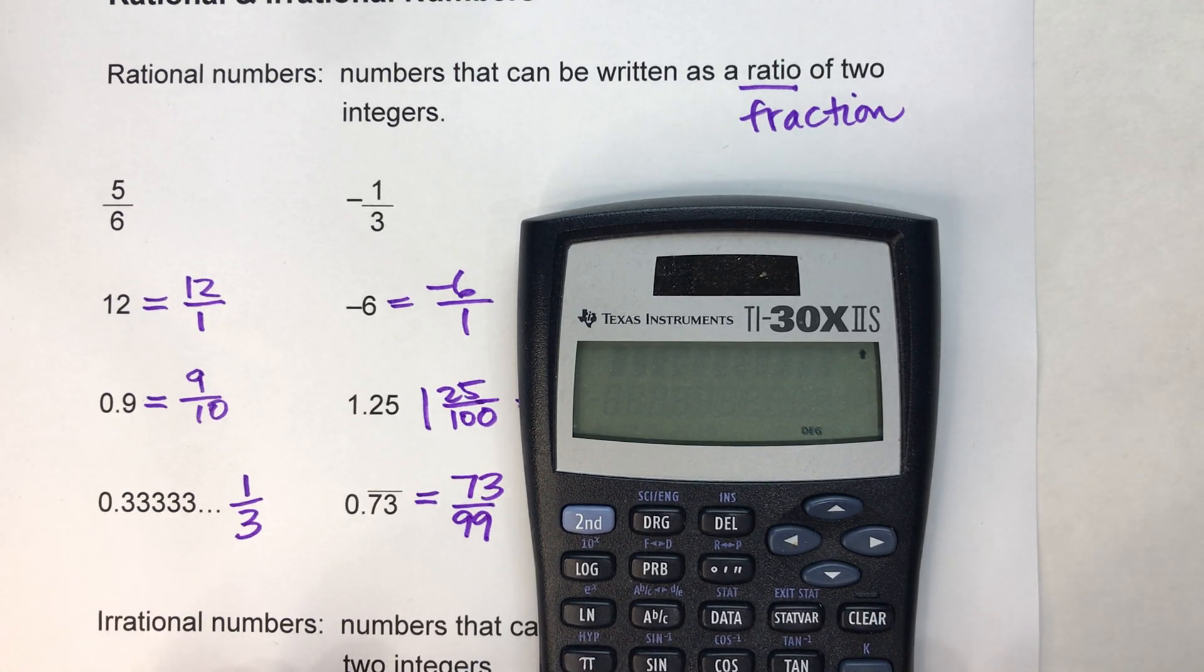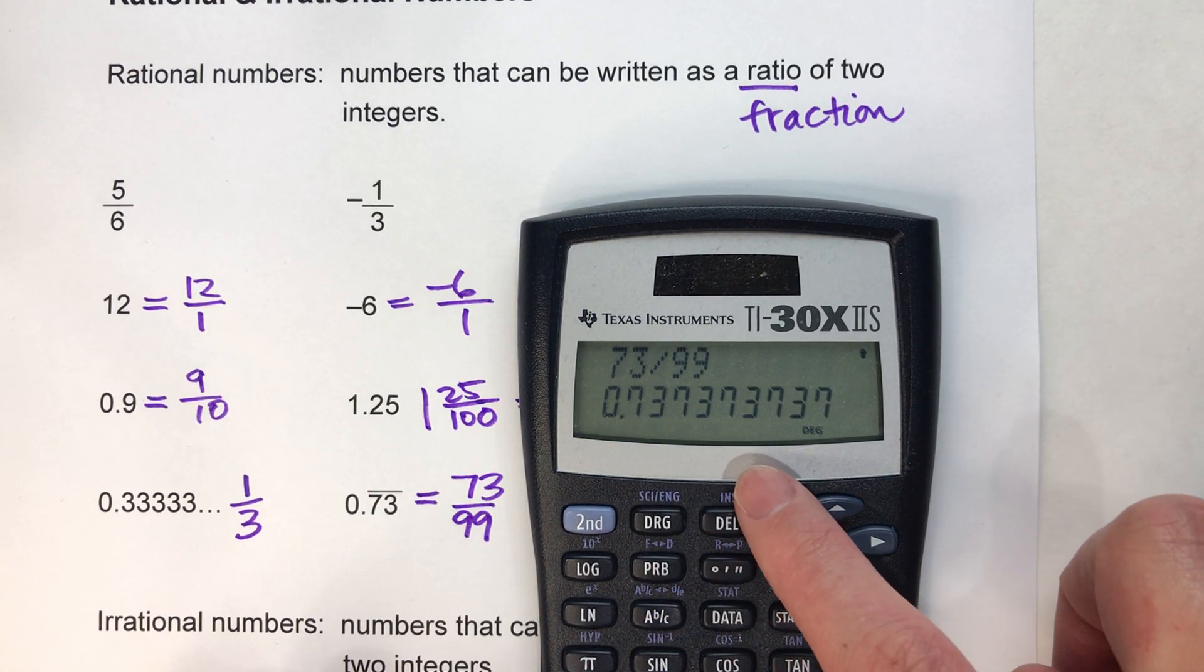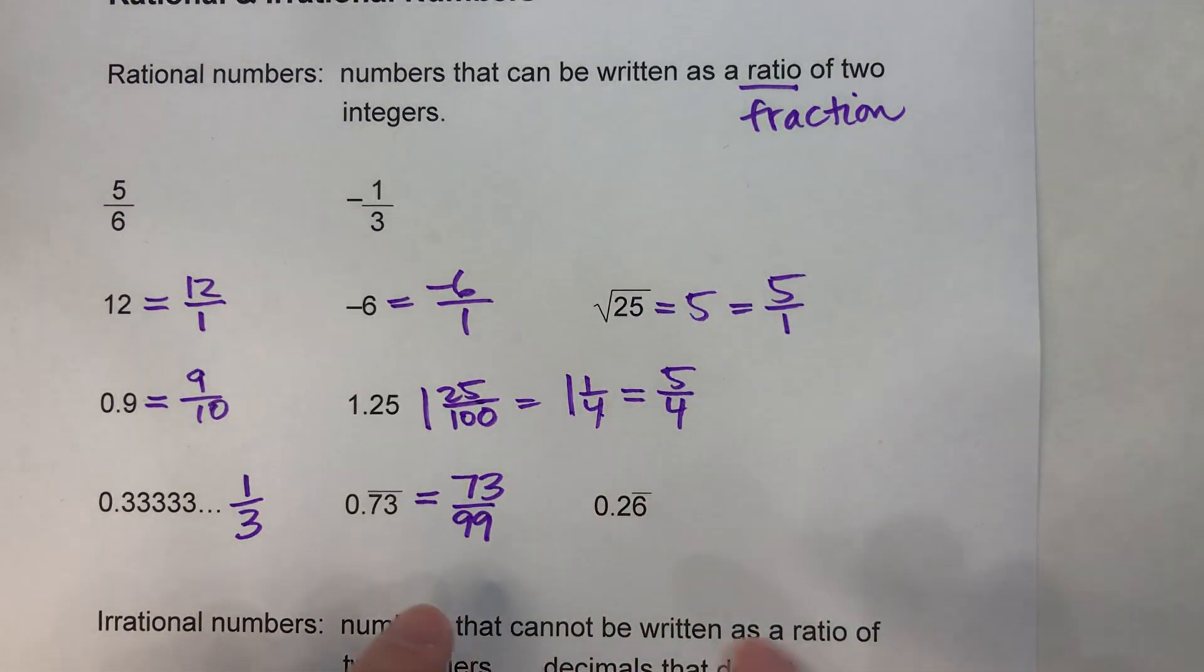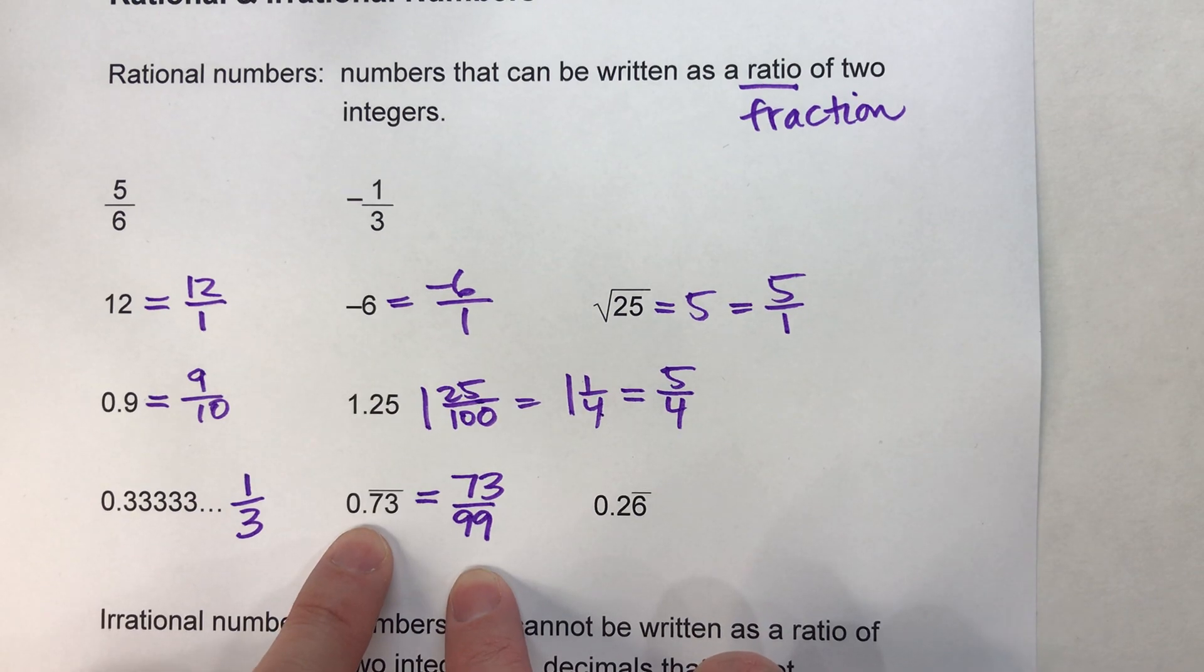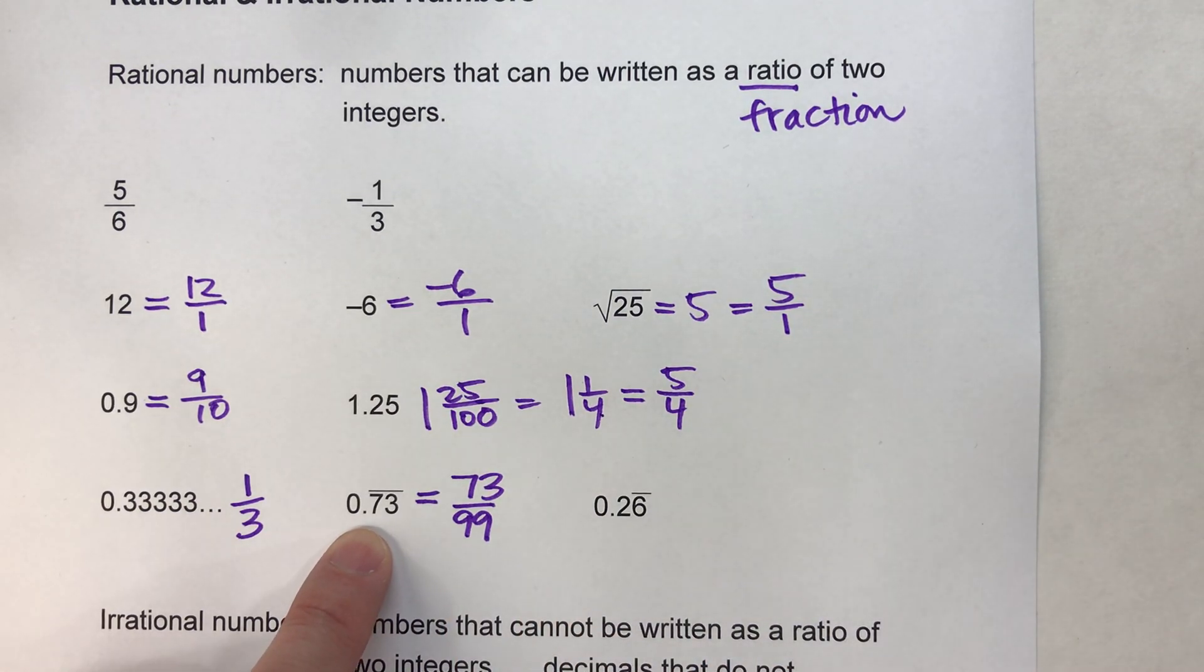And by the way, if you don't believe me: 73 divided by 99 equals 0.737373... So since I can write that as a fraction, I know it's rational—0.73 repeating.